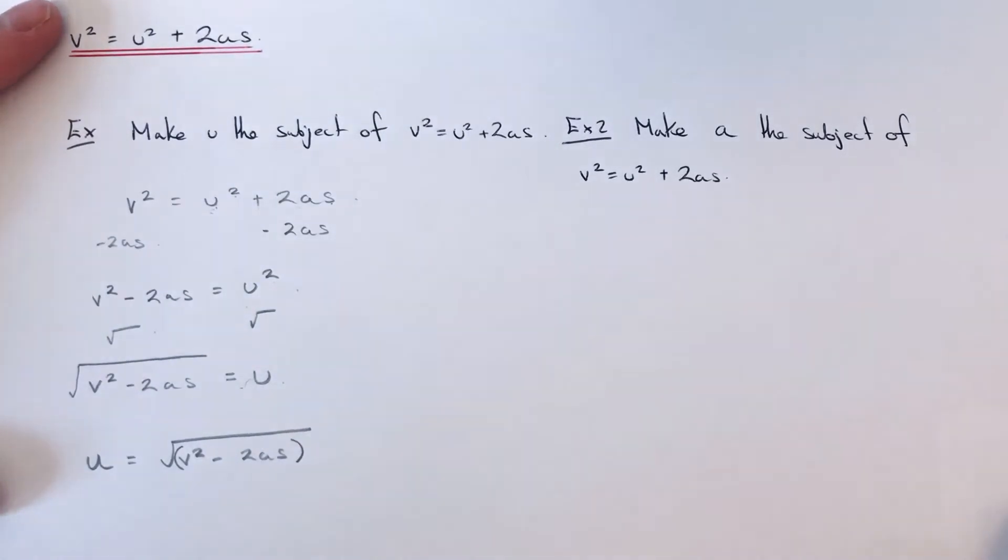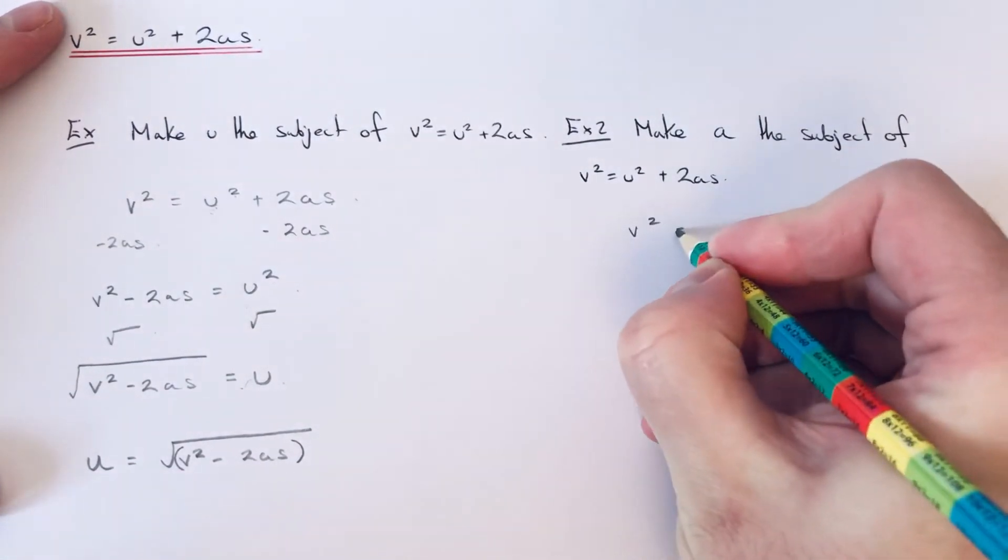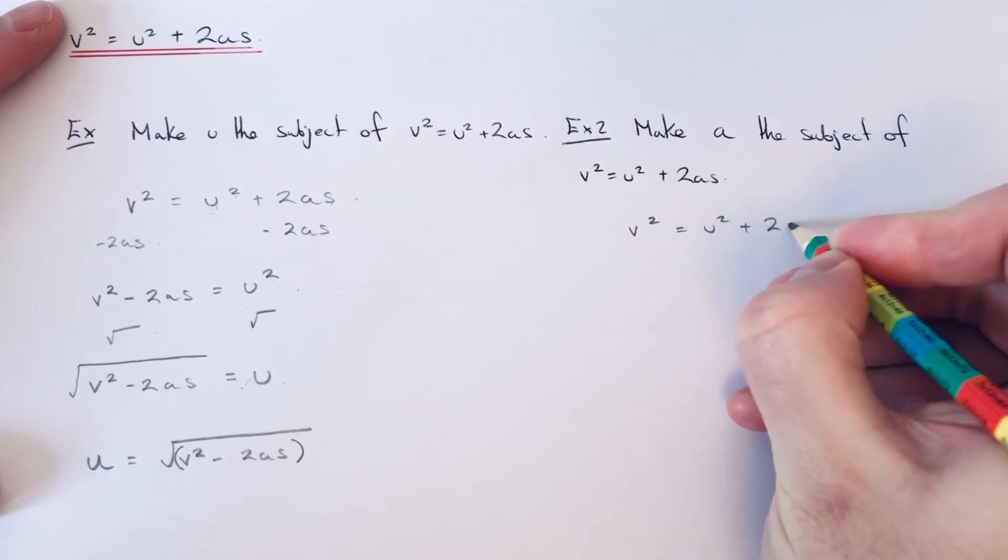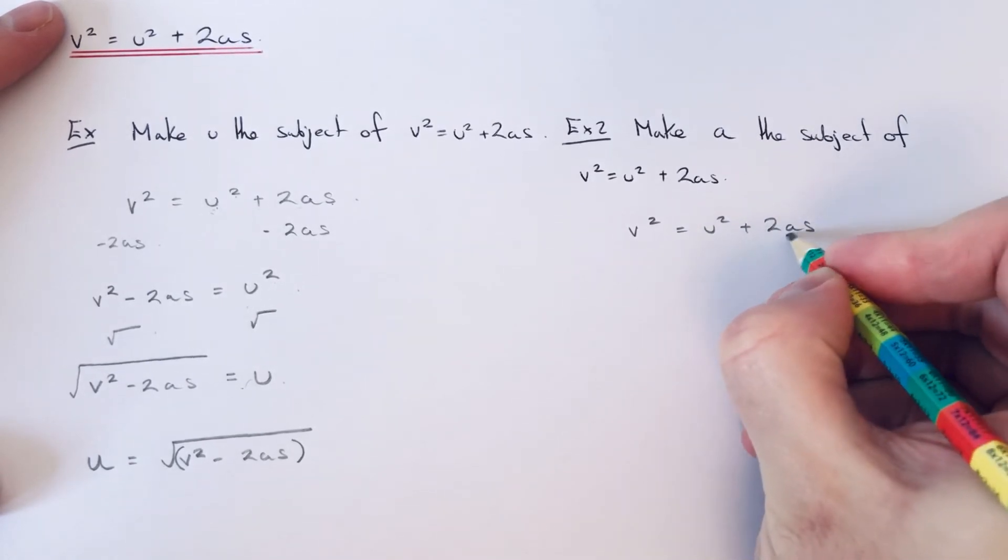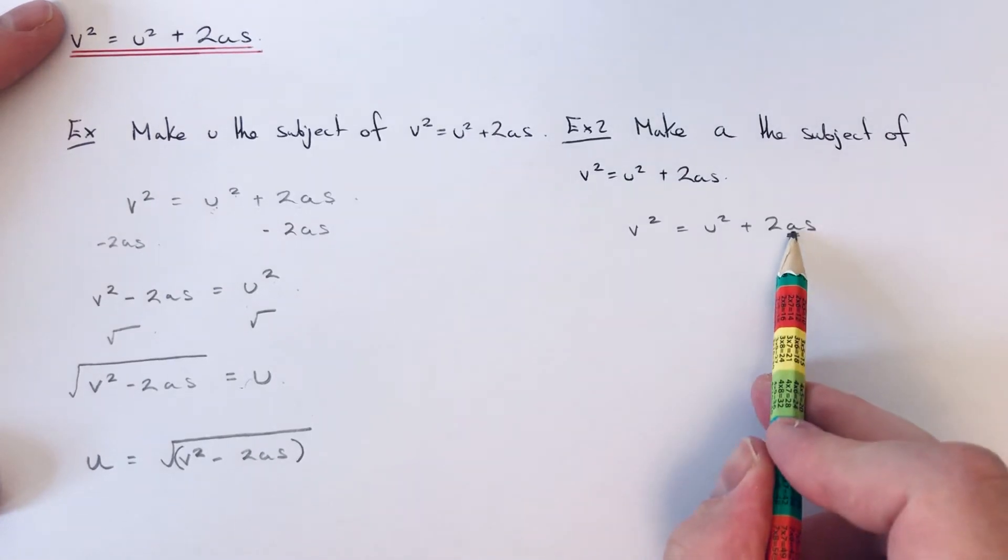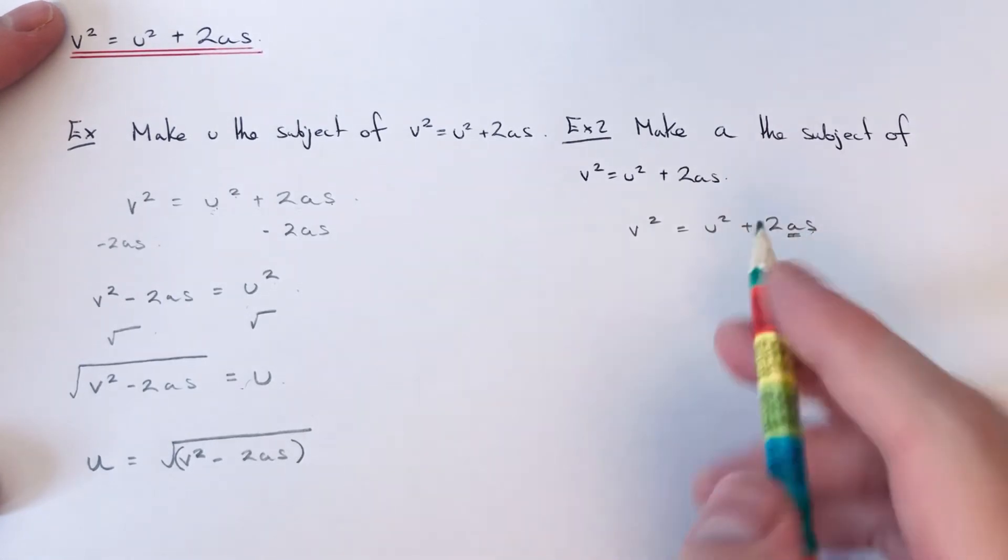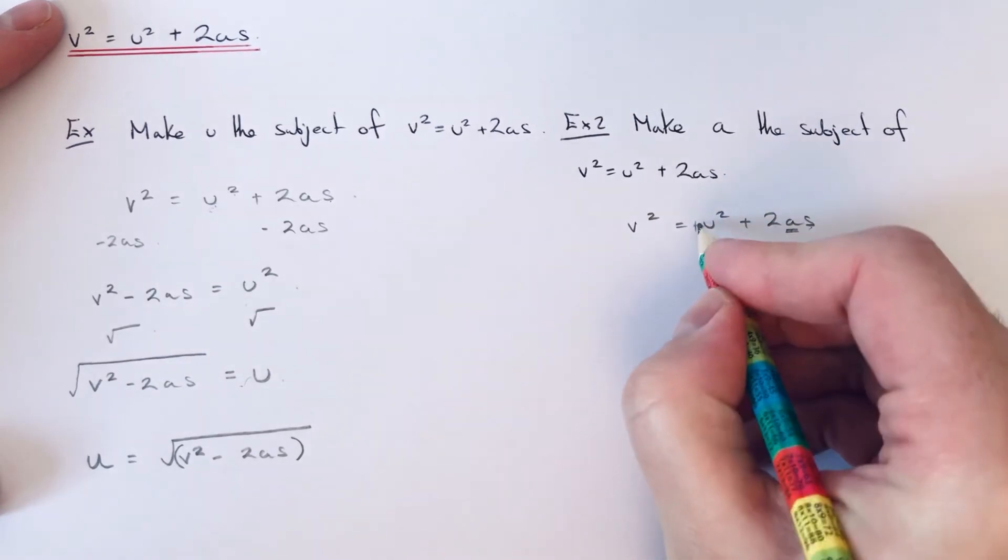This time we need to make a the subject of v² = u² + 2as. Let me just copy our formula down. We're now making a the subject. If we look at what's happening to a, first it's been multiplied by 2 and s, so it's times 2s, and then we're adding on u².